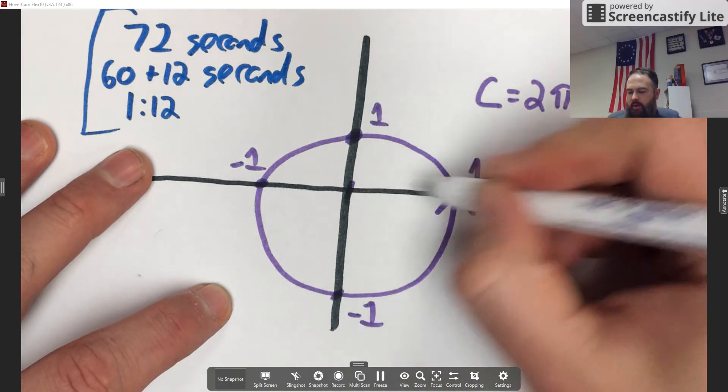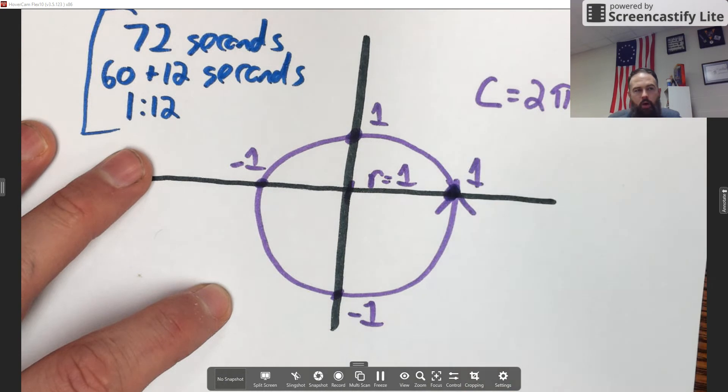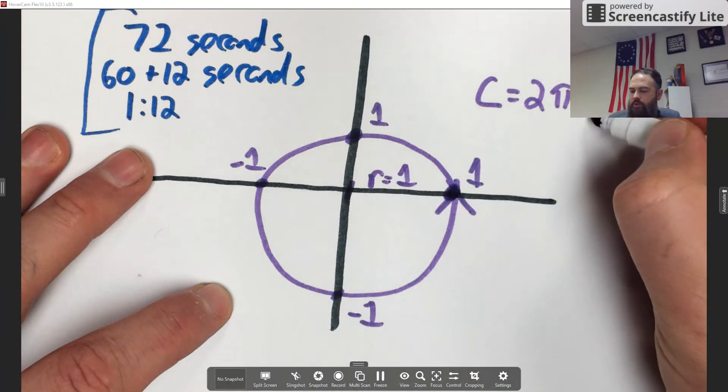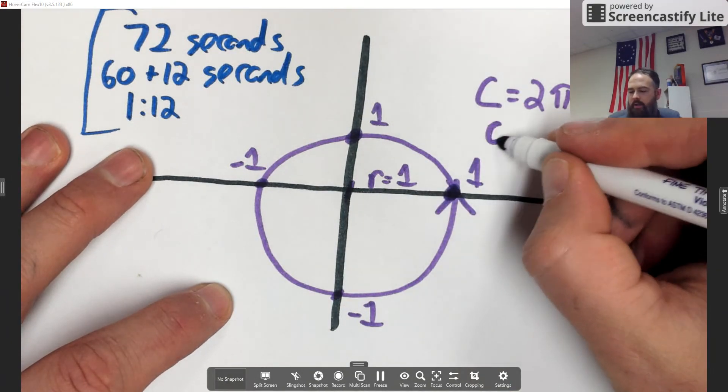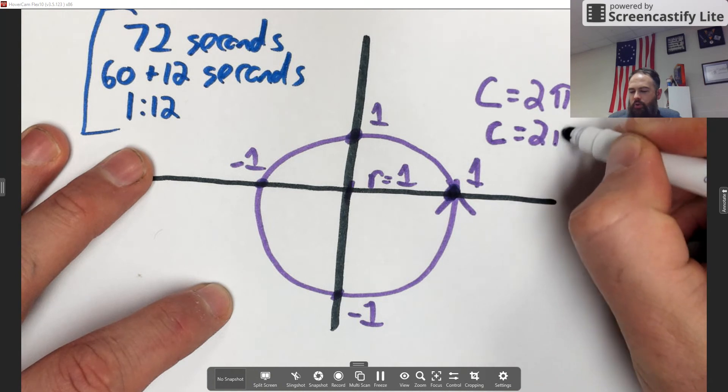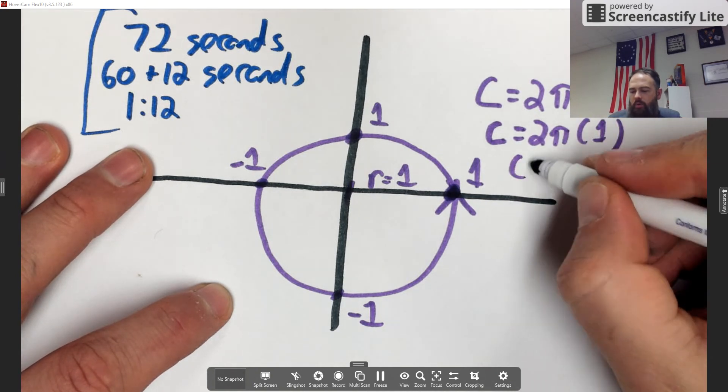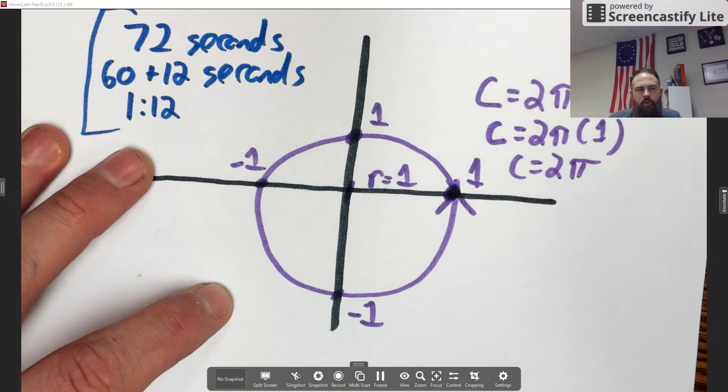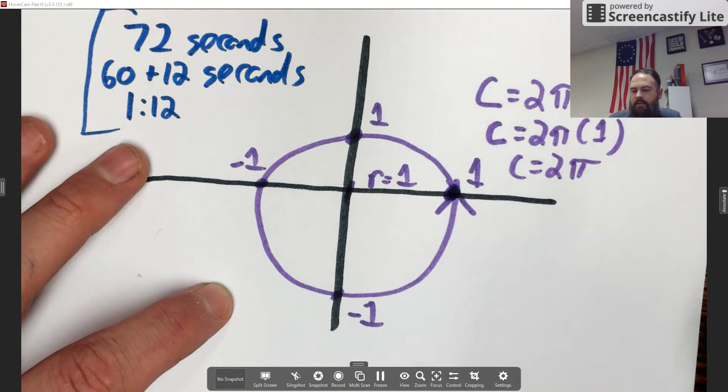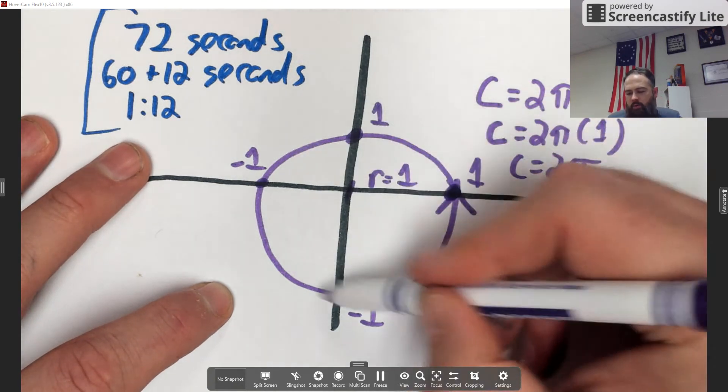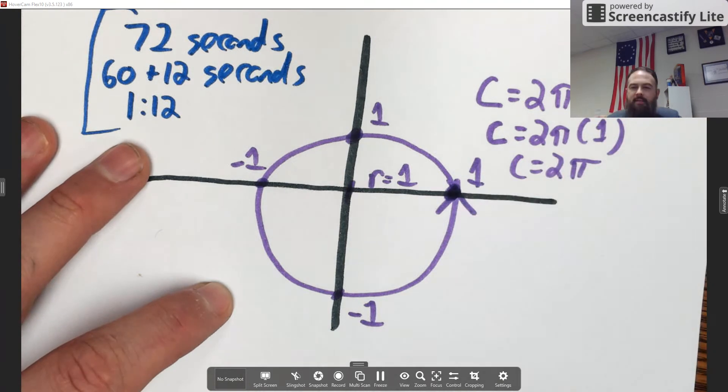From there to there, my radius equals one. So if I was to replace one in here for the radius, I would get the circumference is equal to 2 times pi times 1, or the circumference equals just 2 pi. So what I could say is that the distance around the circle is 2 pi, and that's the basis for the radian system.